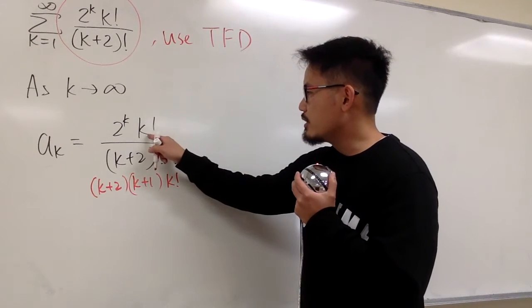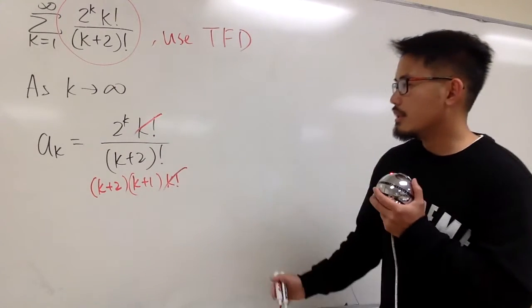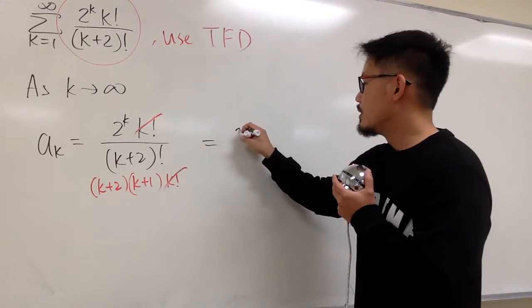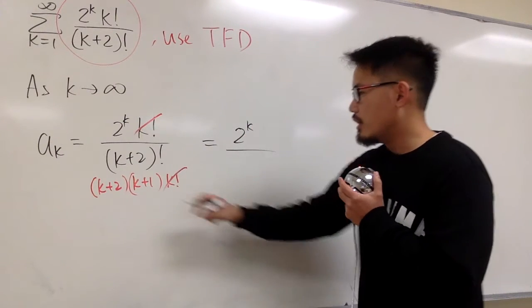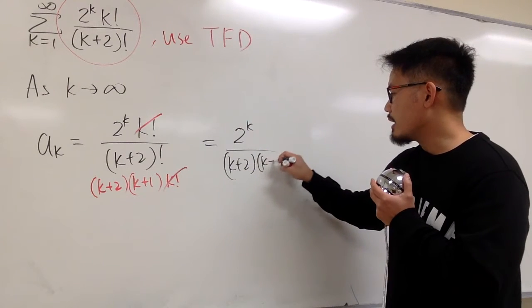And now, we see, we can cancel this k factorial with that k factorial. So, they're out. But, ak is secretly the same as 2 to the kth power over k plus 2 times k plus 1.